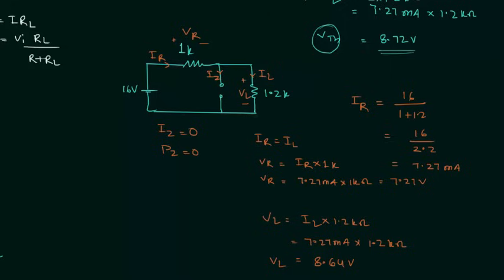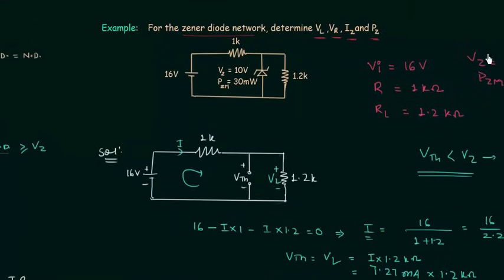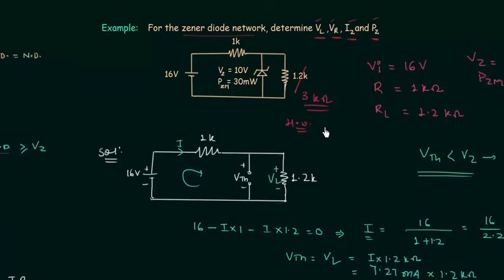I have one homework problem for you. Solve the same problem but with the load resistance equal to 3 kilo-ohms instead of 1.2 kilo-ohms, and find all the same values. Once you have your answers, post them in the comment section. I will end this lecture here and see you in the next one.